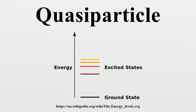In physics, quasi-particles and collective excitations are emergent phenomena that occur when a microscopically complicated system such as a solid behaves as if it contained different weakly interacting particles in free space. For example, as an electron travels through a semiconductor, its motion is disturbed in a complex way by its interactions with all of the other electrons and nuclei. However, it approximately behaves like an electron with a different mass traveling unperturbed through free space.